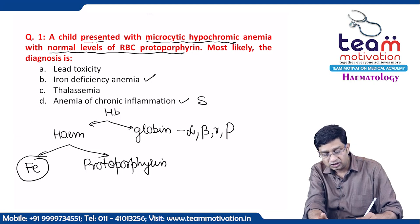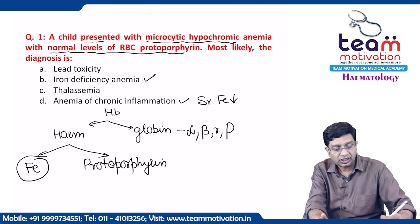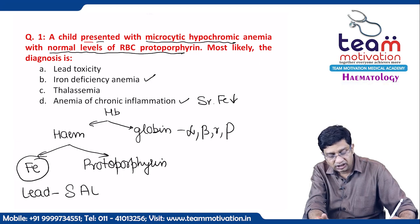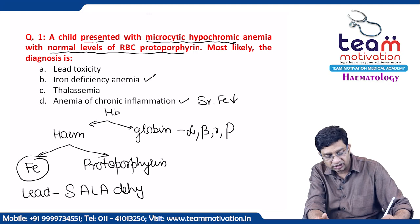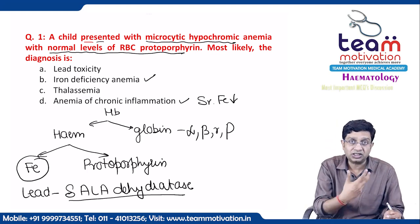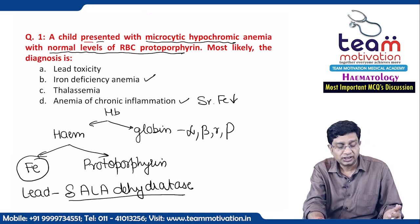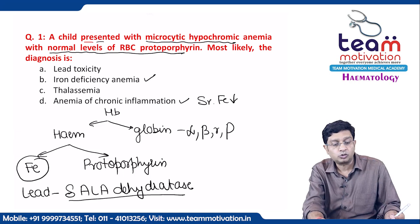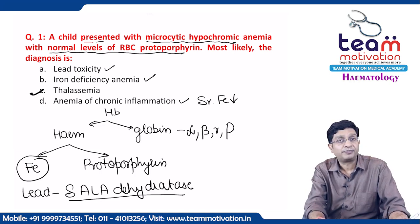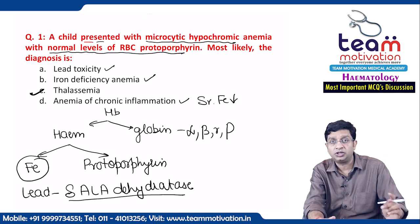Protoporphyrin is increased in iron deficiency anemia and anemia of chronic inflammation because serum iron is decreased. Lead inhibits the enzyme delta-ALA dehydratase, which causes the union of iron and protoporphyrin — so protoporphyrin is also increased in lead toxicity. However, protoporphyrin is normal in thalassemia.